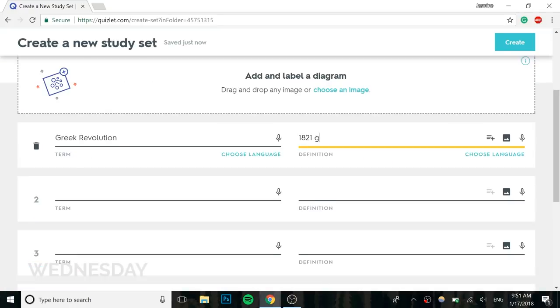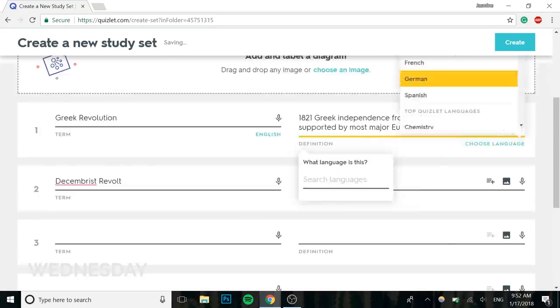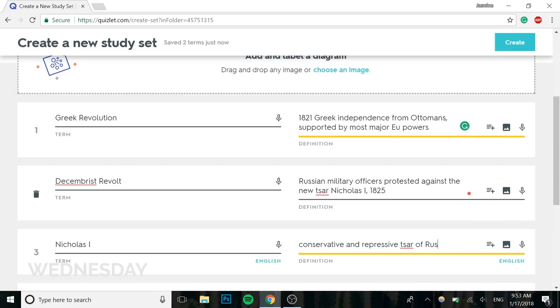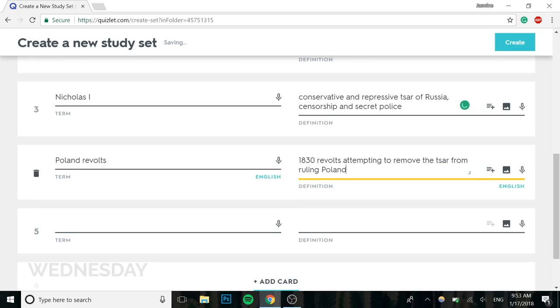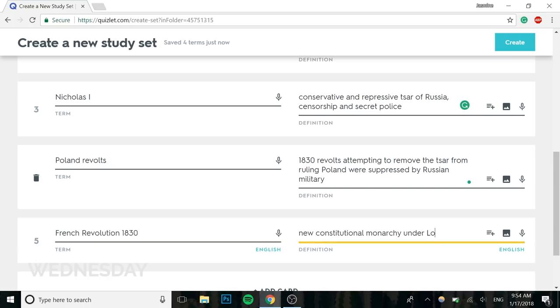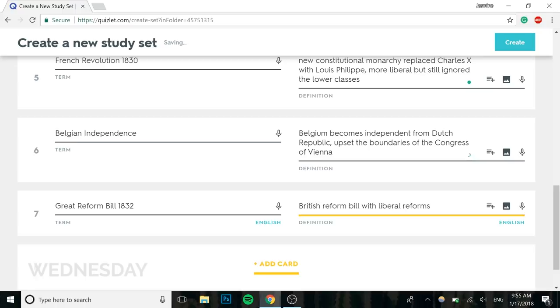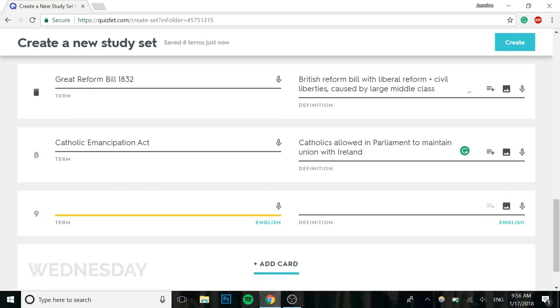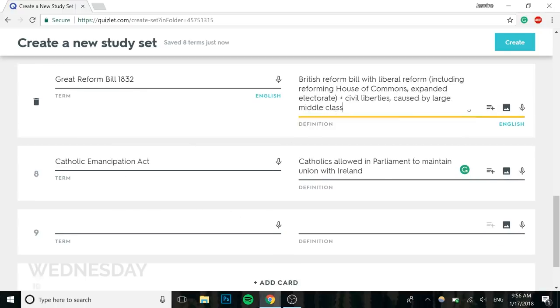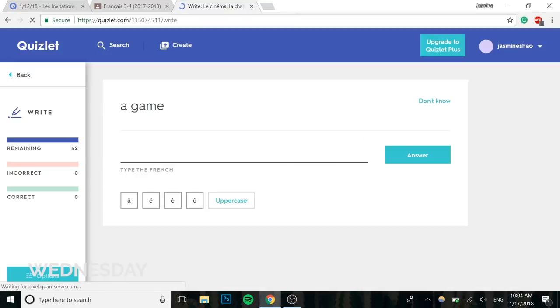So now this is Wednesday. I know you can't really see the title in the bottom left. I did some Quizlet studying and making cards during tutorial, which is like a study hall period. I didn't have my camera, so I just screen recorded. After I finished my history flashcards, I studied for French using a flashcard set that my teacher created, and that's also the reason there's a lot of incorrect answers, because I didn't know whether the teacher put the article in front of the word or not.